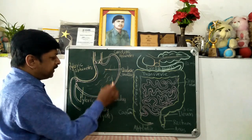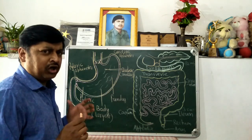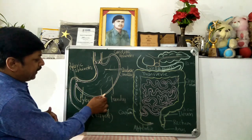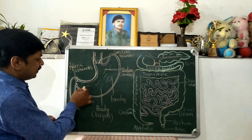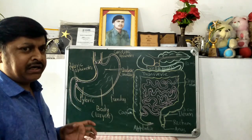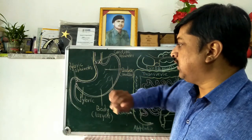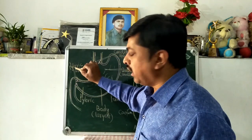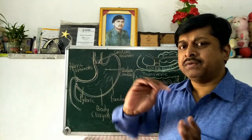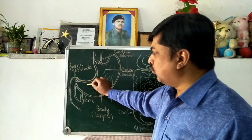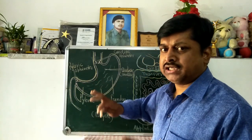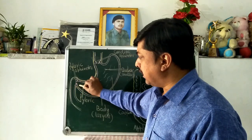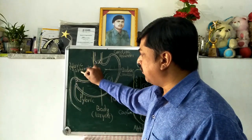After the cardiac stomach, there is the fundus. The largest part of the stomach is the body. The narrow end of the stomach is called the pyloric stomach, which opens into the duodenum — the first part of the small intestine. The opening of the pyloric stomach into the duodenum is guarded by the pyloric sphincter, which regulates the passage of food — converted into chyme — from the pyloric stomach to the duodenum.